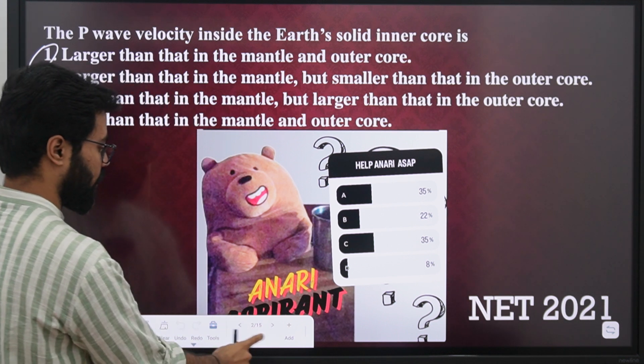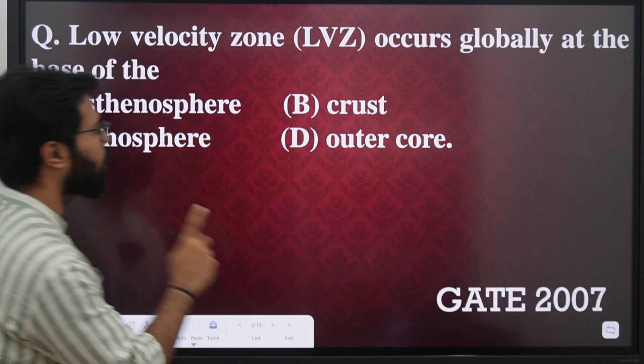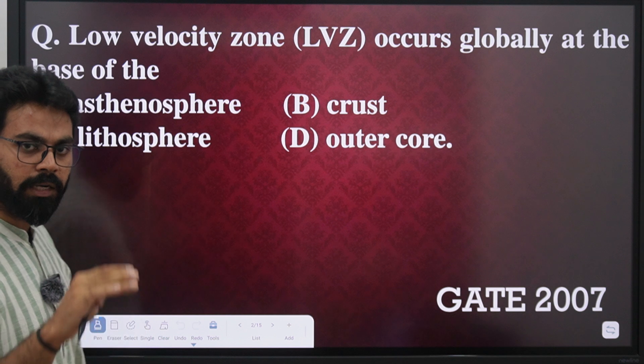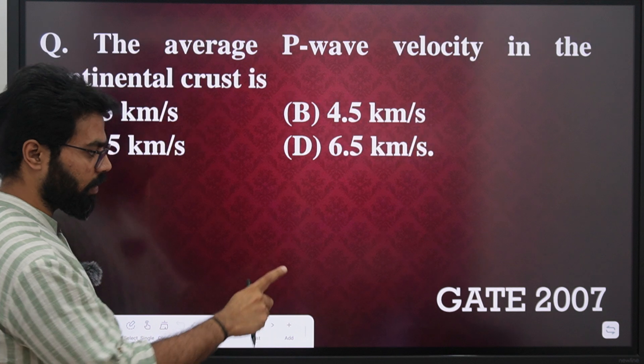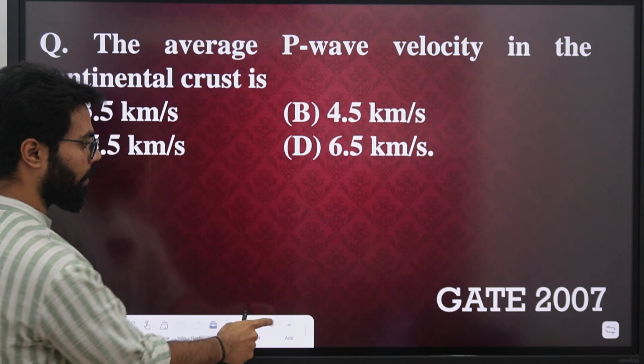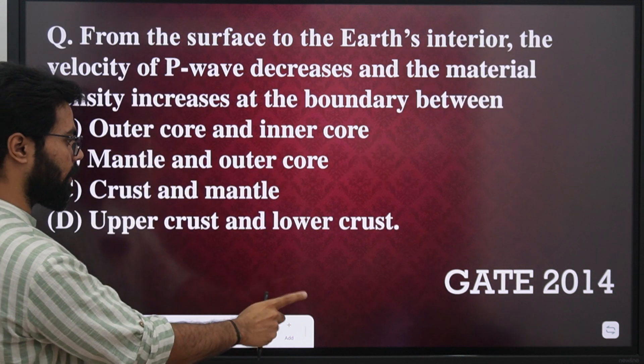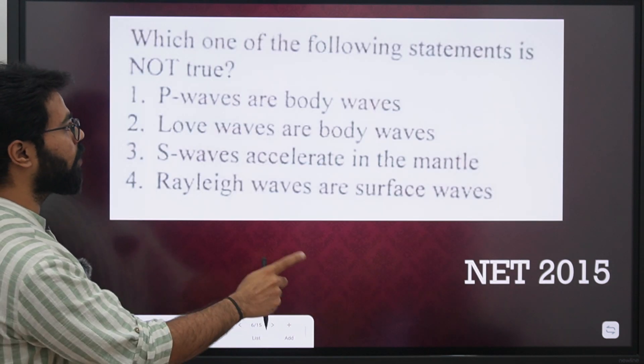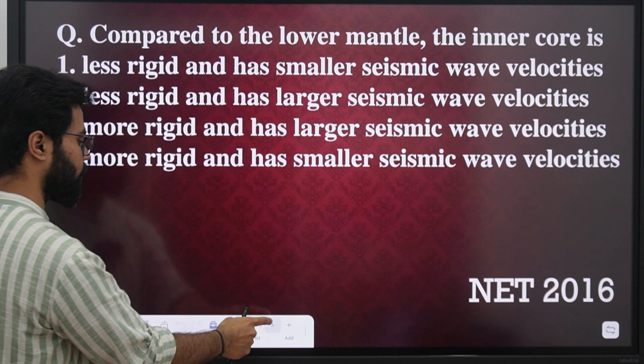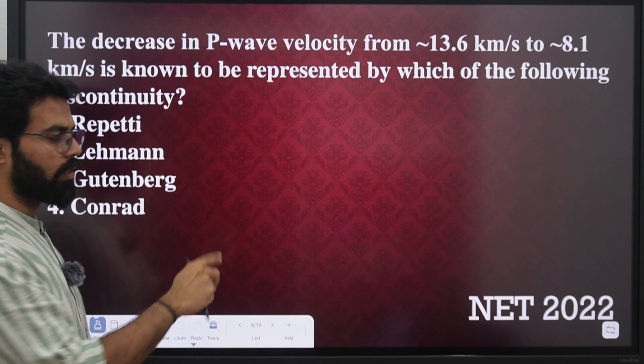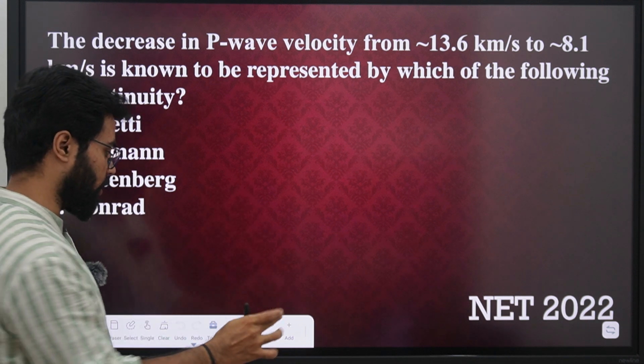In GATE 2007, they asked a question about LVZ, that is low velocity zone. So the topic is seismic waves and internal structure of the earth. The same topic was repeated in GATE 2011, again in 2014, then in NET 2015 seismic waves, NET 2016 again, NET 2022 again. This shows that some topics are more important than others - the PYQ analysis tells us this.